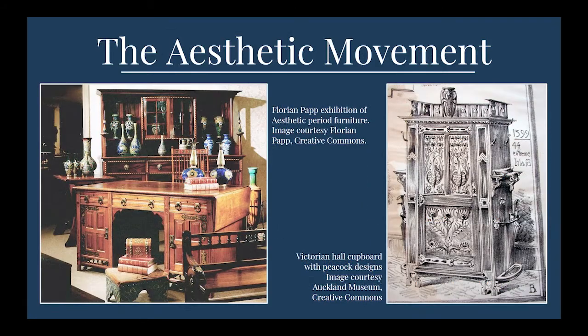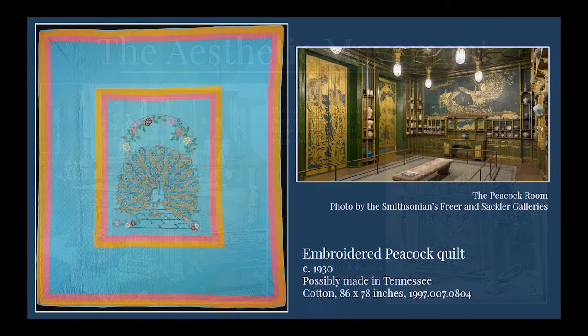The Aesthetic Movement of the mid to late 1800s was a challenge to mainstream Victorian views of the arts. Instead of art reflecting social or political ideas, followers of the Aesthetic Movement thought that art should be beautiful for its own sake. The movement is often characterized by influence from images of East Asia, prominent visual usage of natural symbols — especially birds, feathers, and flowers — and colors that included dark woods with gold highlights and the blue and white porcelain of fine china.